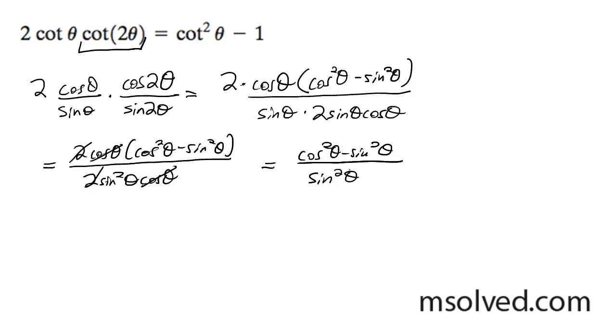We're almost there. What happens next is I'm going to partition these apart, so I'm going to break them down into cosine squared theta over sine squared theta minus sine squared theta over sine squared theta.